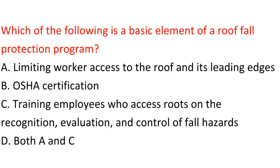Question: Which of the following is a basic element of a roof fall protection program? A. Limiting worker access to the roof and its leading edges. B. OSHA certification. C. Training employees who access roofs on the recognition, evaluation, and control of fall hazards. D. Both A and C. Answer: D. Both A and C.